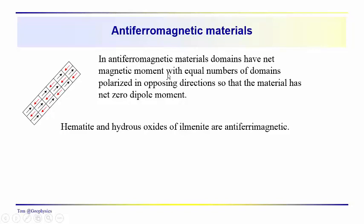Antiferromagnetic materials are a special class where there are an equal number of magnetic domains pointing in one direction matched by the number pointing in the opposite direction, so we tend to have a net zero dipole moment. Hematite and hydrous oxides of ilmenite are antiferromagnetic.